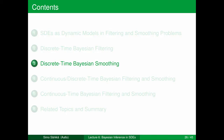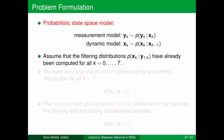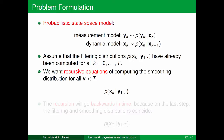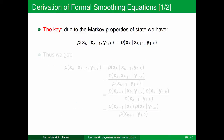Now let's move to discrete time Bayesian smoothing. Recall our problem: we have a probabilistic state space model with a measurement model p(yk | xk) and a dynamic model as the transition density p(xk | xk-1). We assume we already have the filtering distributions p(xk | y1:k) at least approximately. In the smoothing case we want recursive equations for computing the smoothing distributions for all k less than T — all states in the middle of the interval. It's natural to form a recursion going backwards in time, because on the last step the filtering and smoothing distributions are the same.